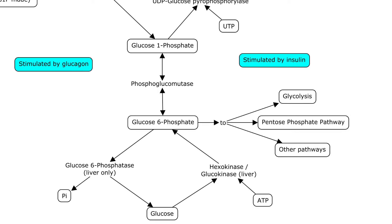Phosphoglucomutase is going to rearrange that G1P to glucose 6-phosphate, and then if you're in the liver, glucose 6-phosphatase is going to turn that into glucose and kick off an inorganic phosphate. That whole side is stimulated by glucagon — that's when you don't have glucose coming from your intestine, you haven't eaten in a while, so your glucagon levels rise and you break down your glycogen into glucose.